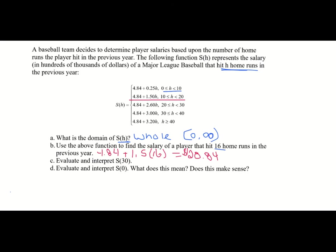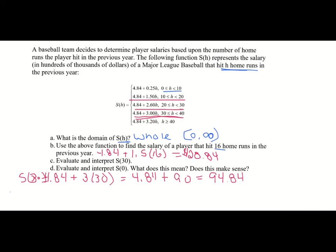Evaluate and interpret S of 30. 30 home runs falls in the highest bracket, so we use 4.84 plus 3 times 30. 3 times 30 is 90, so 4.84 plus 90 gives S of 30 equals 94.84 hundreds of thousands of dollars.